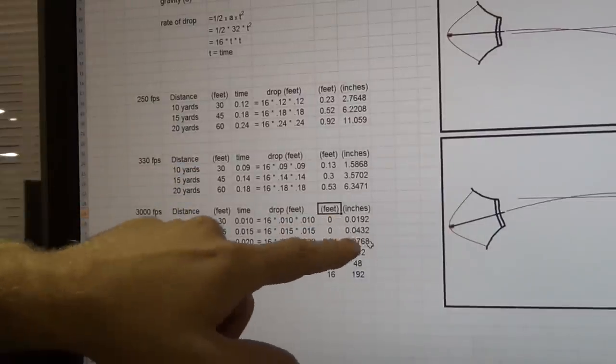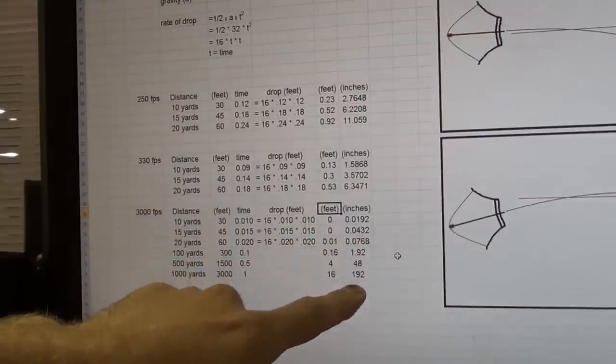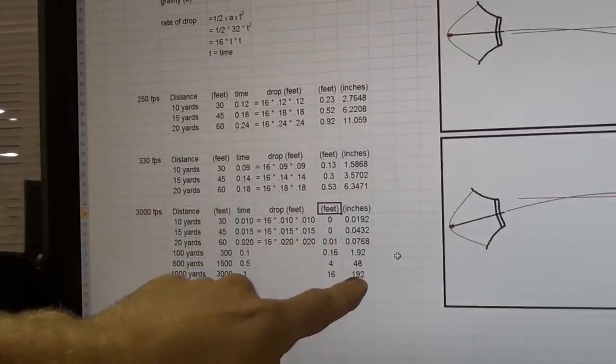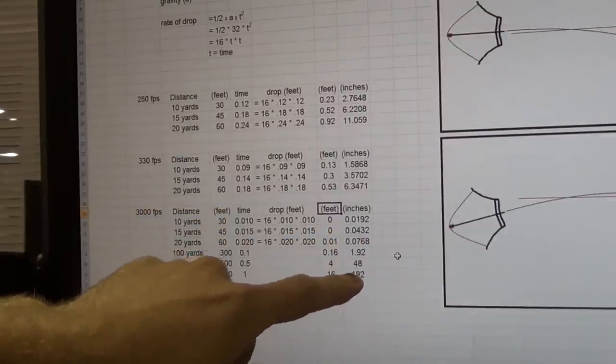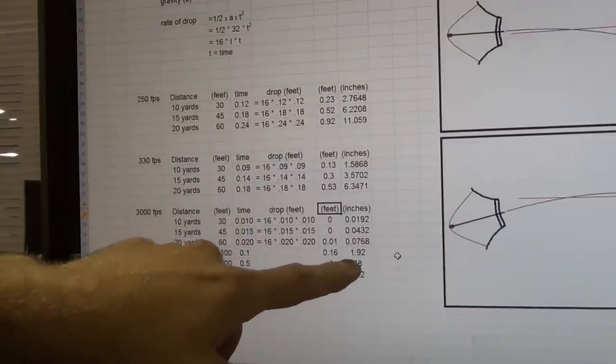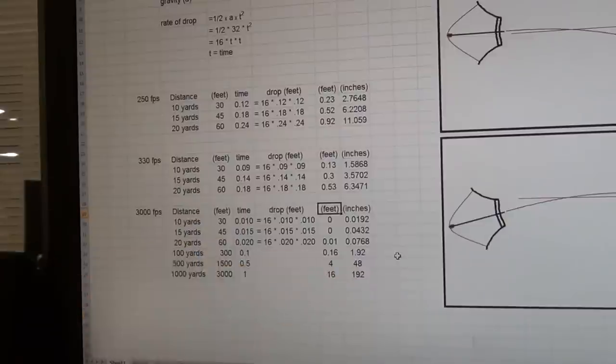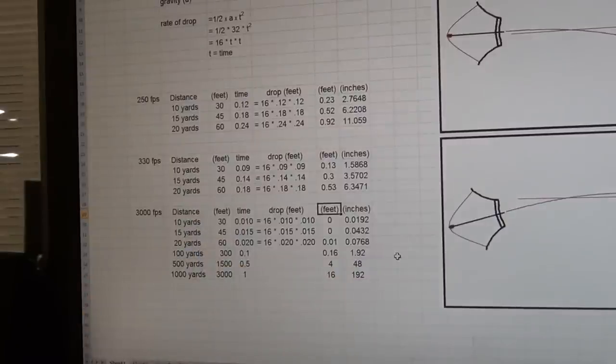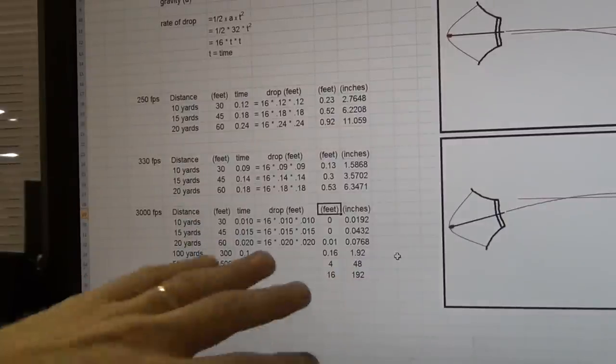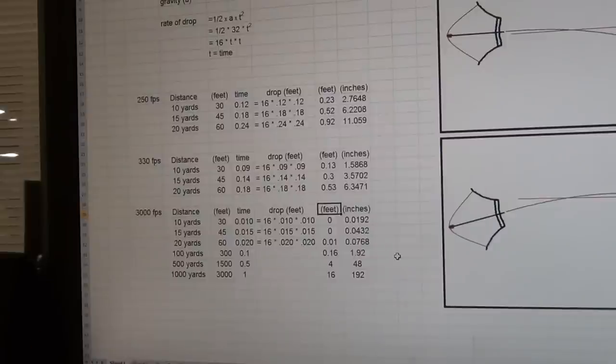Again, this is assuming no air resistance, so the bullet just flies. But from 10 yards all the way up to 1,000 yards. And if you look at that in feet, or if you look at in inches, at 10 yards, you have basically 19 thousandths of an inch drop. But you get out to 1,000 yards, you've got 192 inches of drop. At 100 yards, it's almost 2 inches. Then at 500 yards, it's at 48 inches.